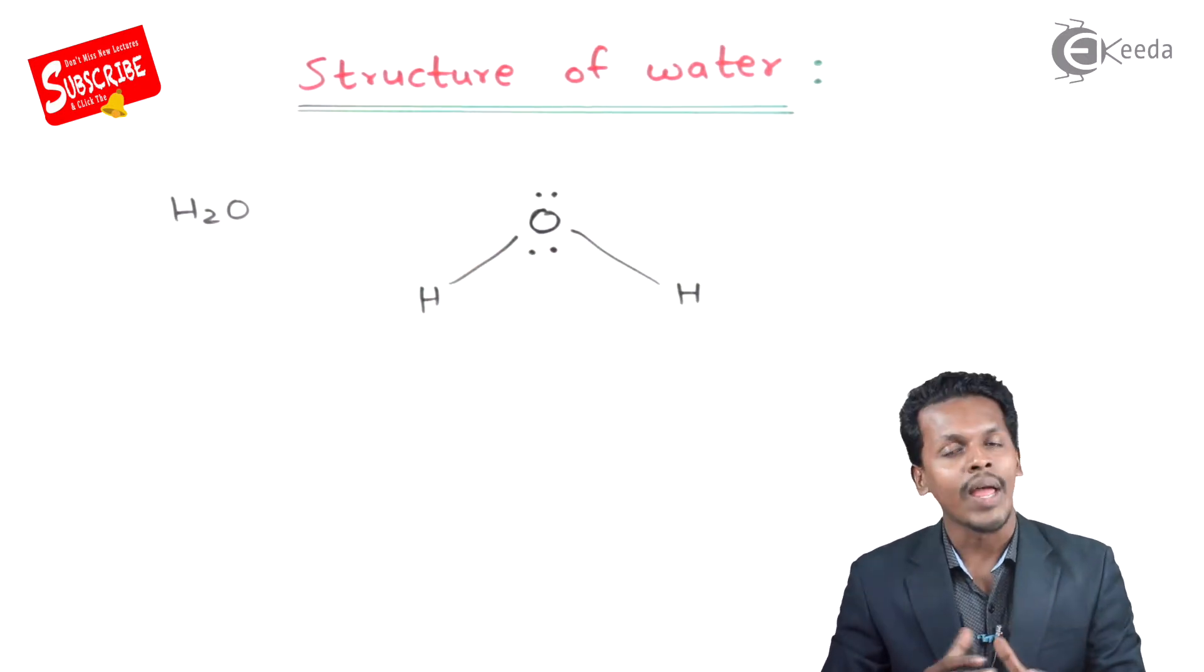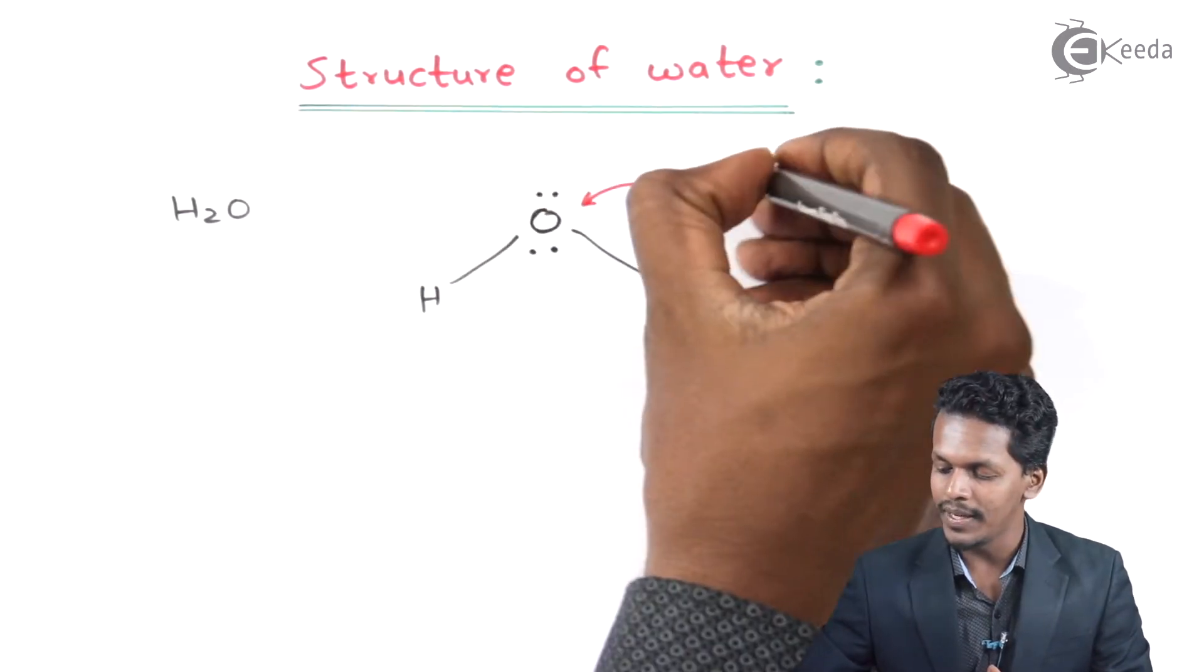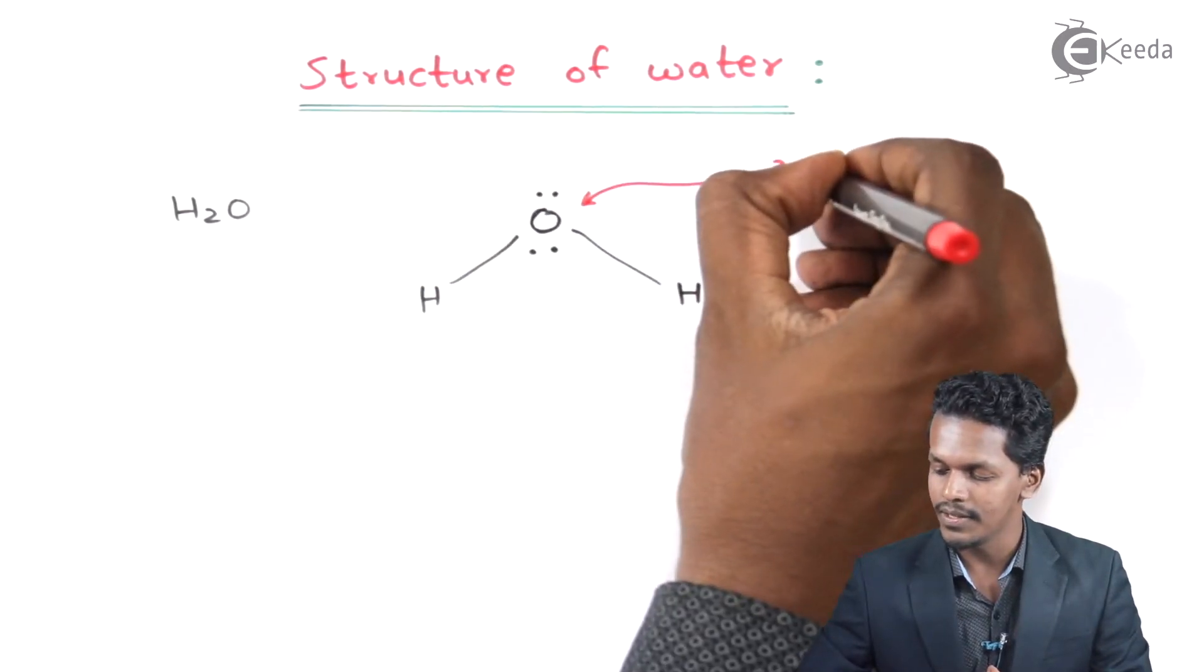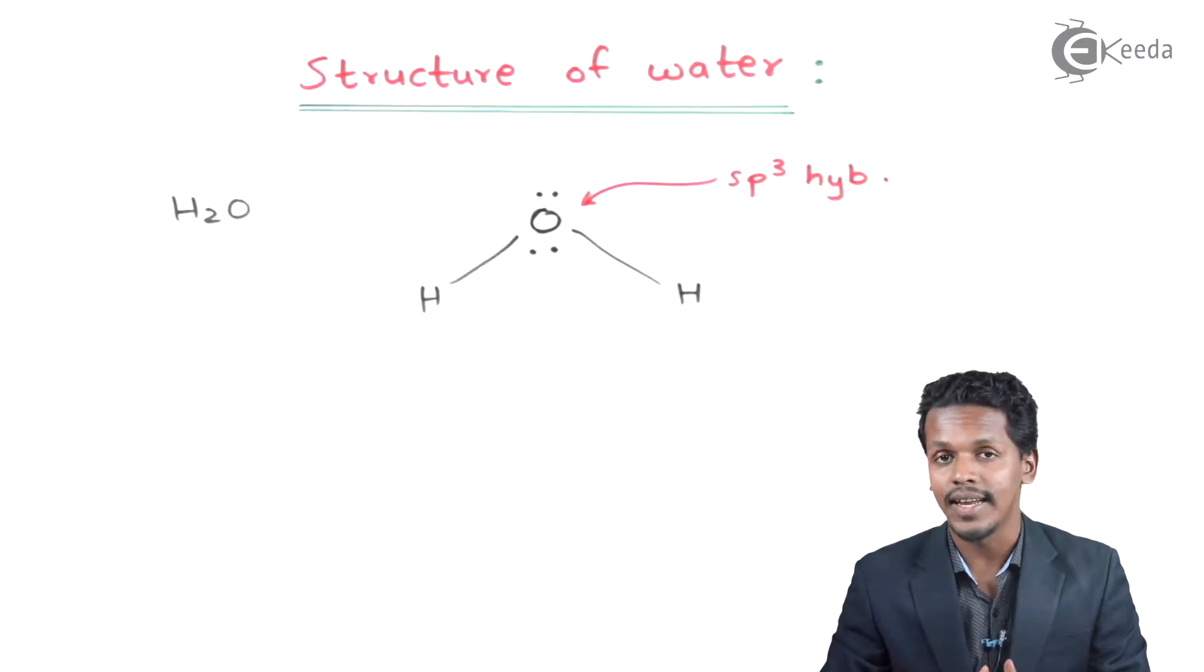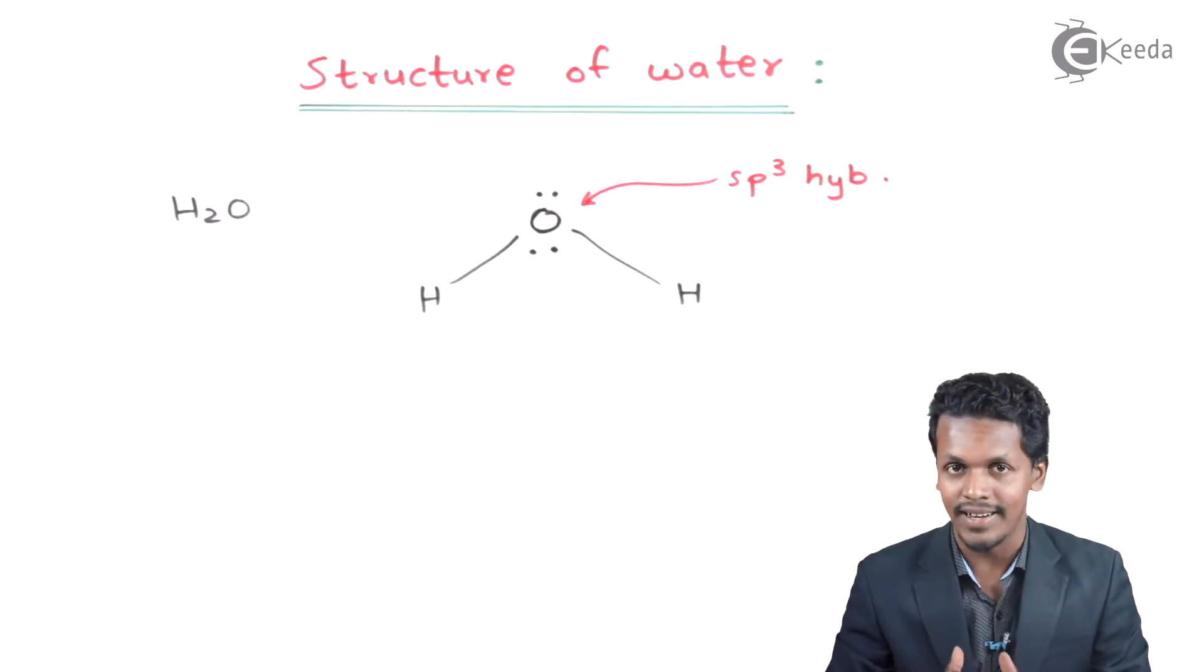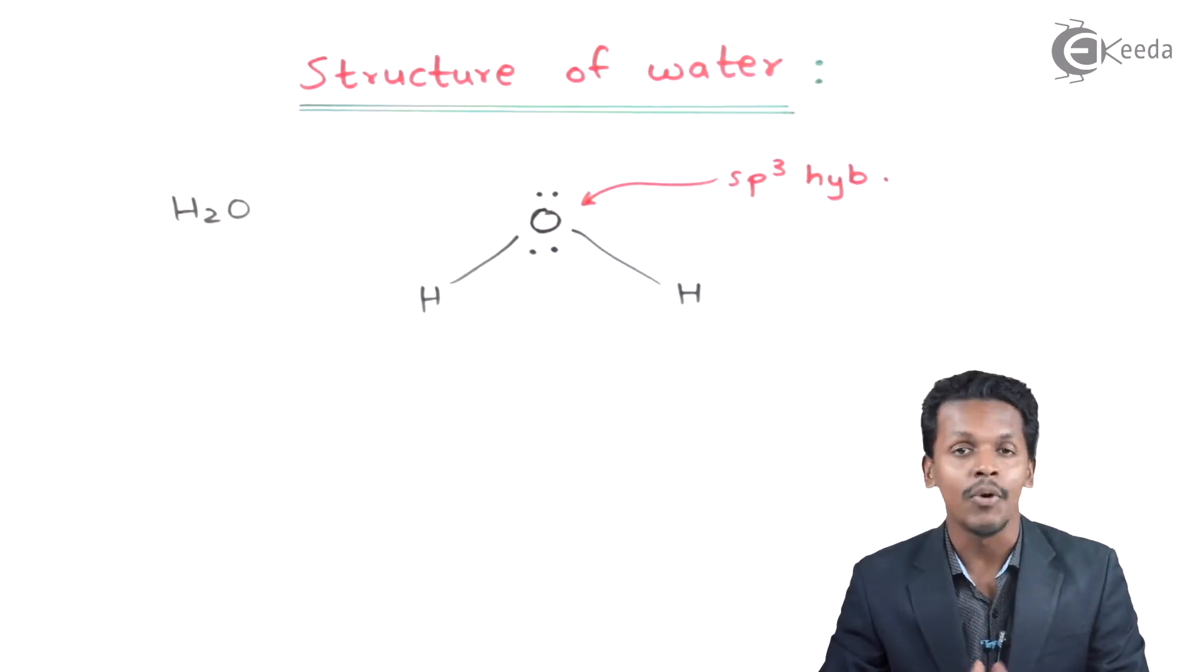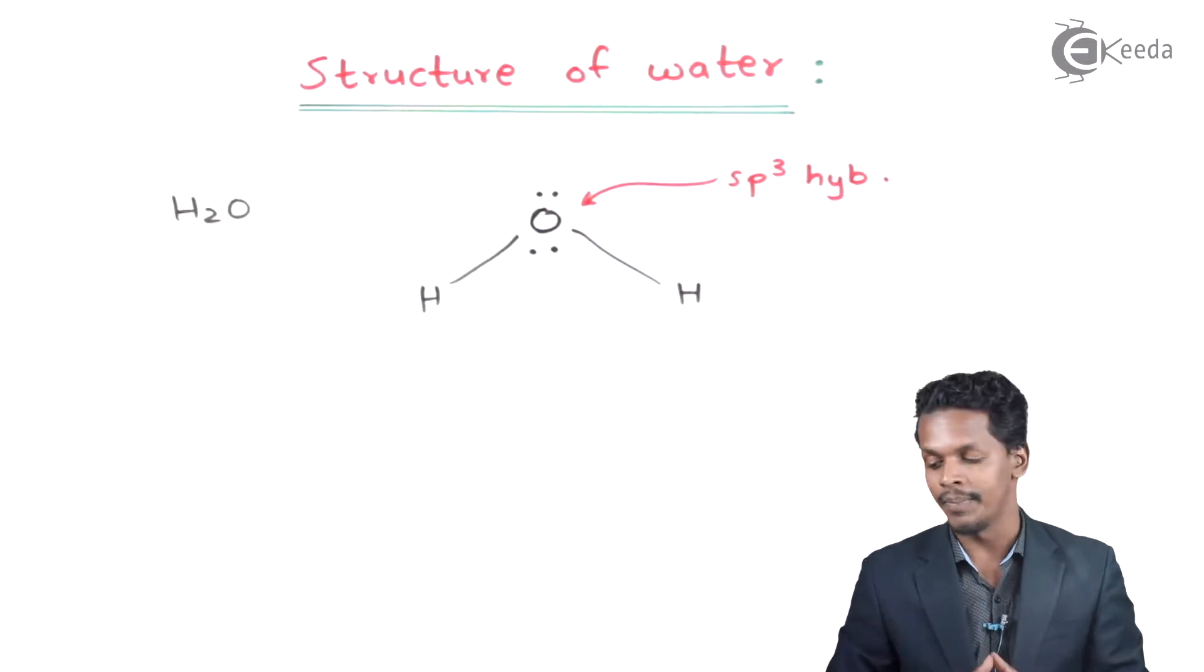Through hybridization, it has been found that oxygen is exhibiting sp3 hybridized structure, and because of this, the structure of H2O should not be planar. It should be tetrahedral because sp3 hybridization molecules are tetrahedral in nature. The irregular sp3 hybridized structure should exhibit a bond angle of 109 degrees 28 minutes.